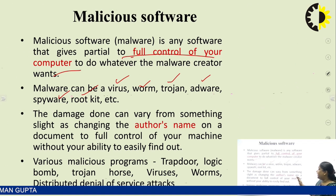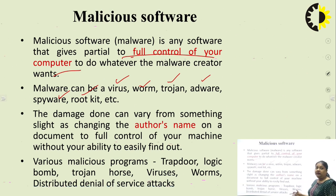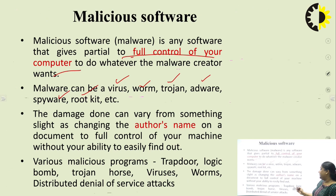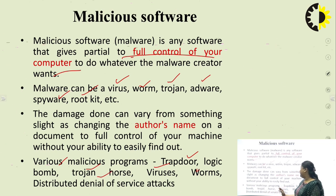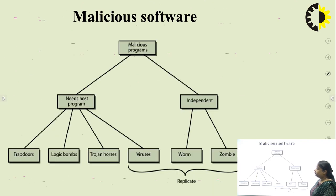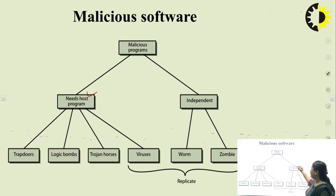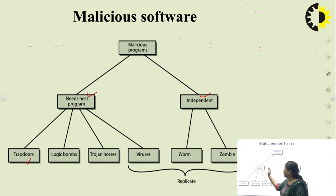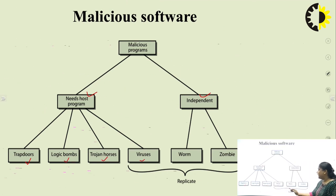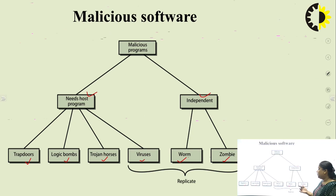The damage done can vary from something slight as changing the author's name on a document to full control of your machine without your ability to easily find out. Various malicious programs include trapdoors, logic bombs, Trojan horses, viruses, worms, DOS attacks, and many more. We can classify malicious programs as those which need a host program — like trapdoors, logic bombs, Trojan horses, and viruses — and independent ones like worms and zombies, which can also replicate themselves.